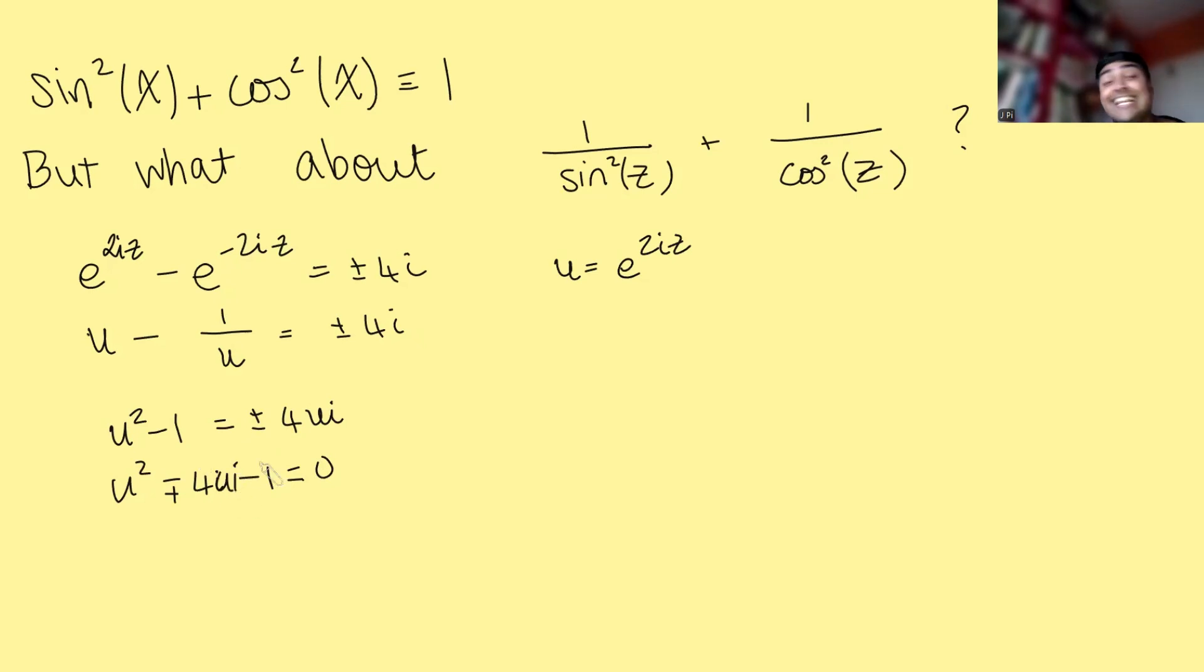Now, this is just a quadratic, and we know how to deal with quadratics. We could use the formula. We could use completing the square. We could try and factorize this, but that won't be very nice. I'm going to use completing the square here. So this is going to be U minus or plus 2i squared. Then it's going to be minus 2i squared. So that's going to be minus or plus 4 minus 1 equals 0. So I've got U minus or plus 2i squared plus 3 is 0.